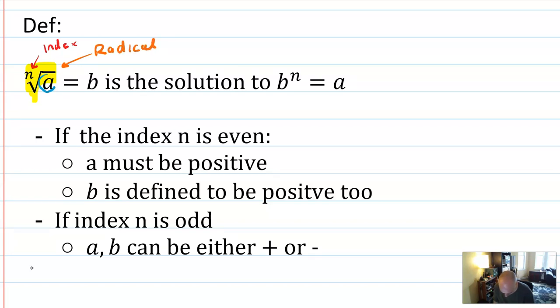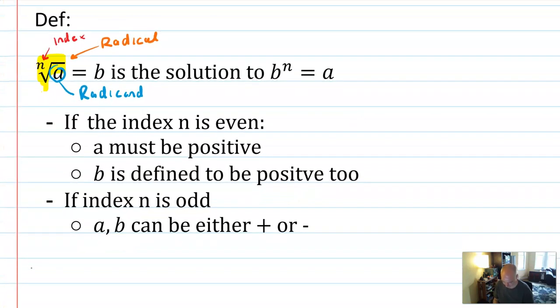And the thing underneath the radical symbol is called the radicand. So you're doing the radical of the radicand. So that's going to help. Now that we know what the index is, there's a couple rules.